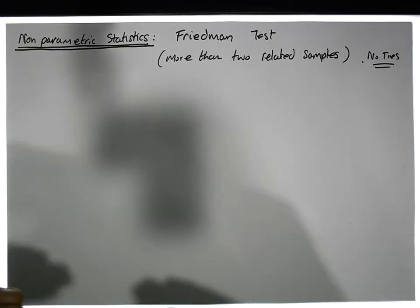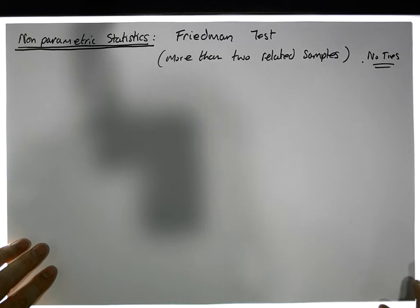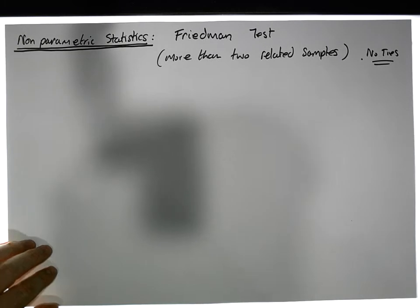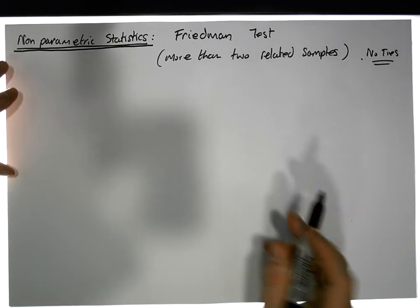The measurements at each level are dependent on each other, and this Friedman test helps us understand whether there is a change across the particular levels.